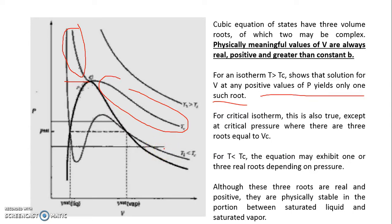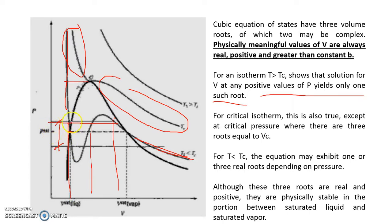For T less than Tc, the equation may exhibit one or three real roots depending on pressure. If pressure is sufficiently high above vapor pressure, there is only one real root — the liquid root. If pressure is sufficiently low below vapor pressure, there is again only one real root — the vapor root. But if pressure is in the vicinity of vapor pressure, drawing a horizontal line on the PV diagram shows three intersections: mathematically you get three roots, only one of which is physically meaningful depending on the system state.